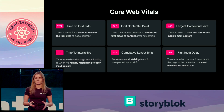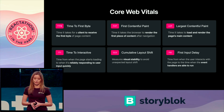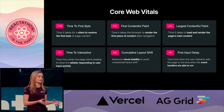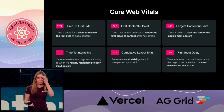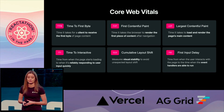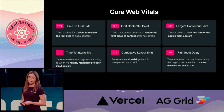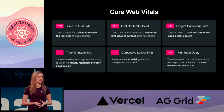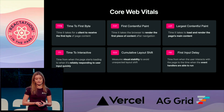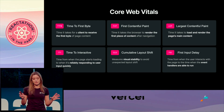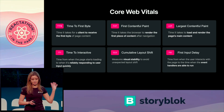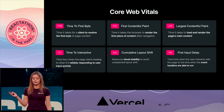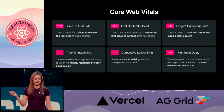Core web vitals are a set of really useful measurements that tell us how well our site performs. For example, the time to first byte tells us how quickly our server responds with the initial data to make sure that our users don't stare at a blank screen for too long. And the first contentful paint tells us how quickly our users are able to see the first contentful content. If we want to have a website with great SEO, we have to start caring about optimizing for these core web vitals.